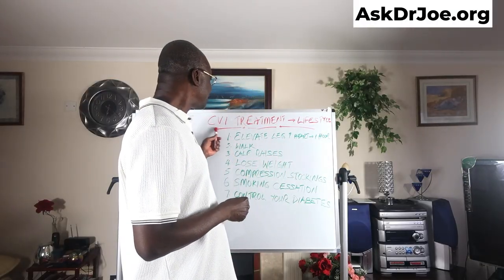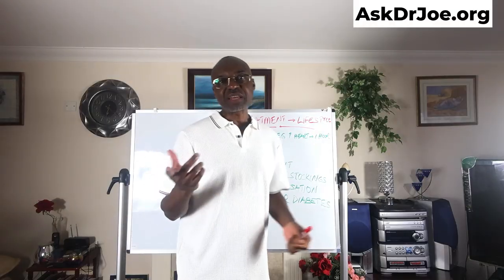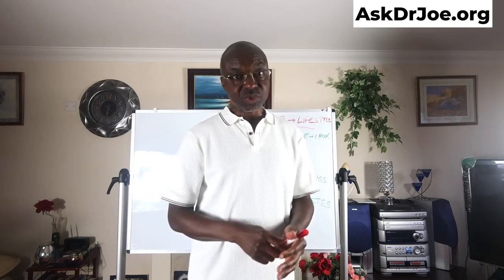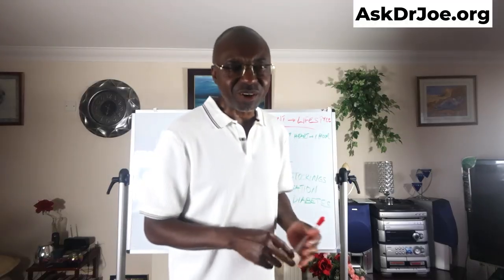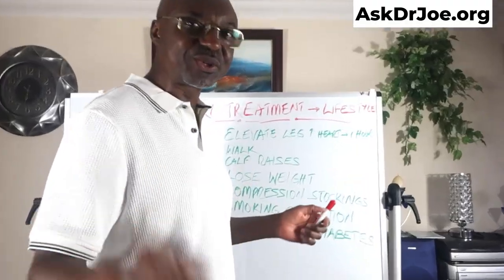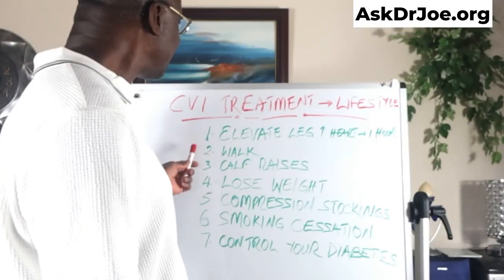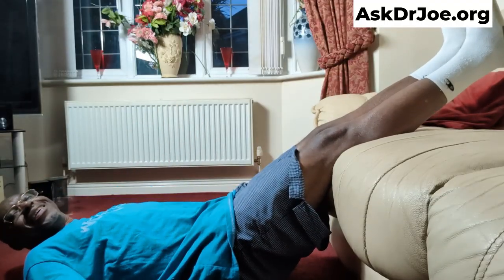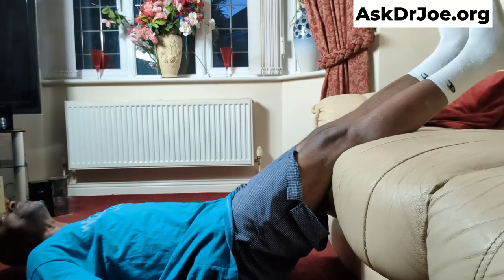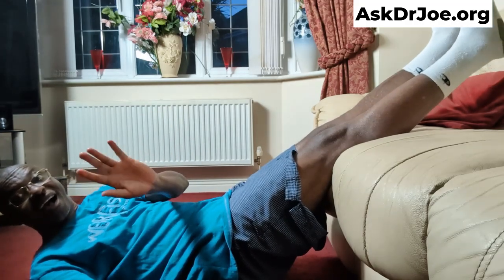Now let's turn our attention to the management of chronic venous insufficiency. I'm going to focus on lifestyle — not the things we do in conventional medicine. The first thing you can do is elevate the legs, but the most important point is you need to elevate them above the level of the heart. You want to do that for at least an hour — that will help to drain the veins of the leg and return the blood to the heart.